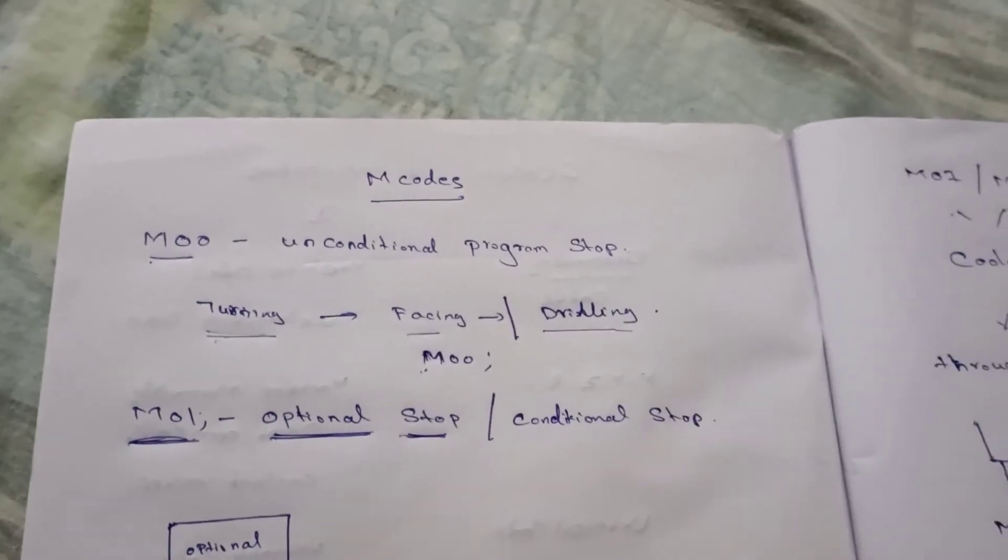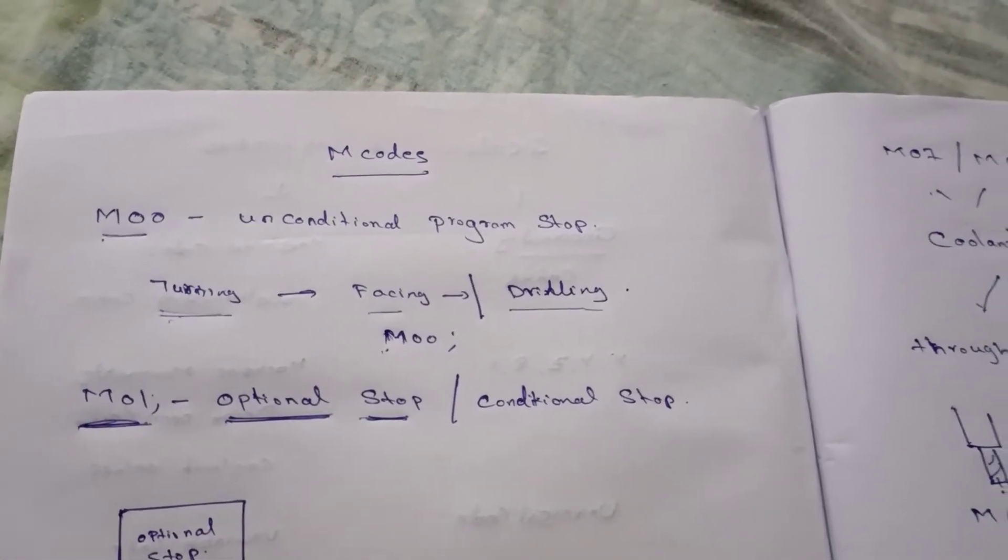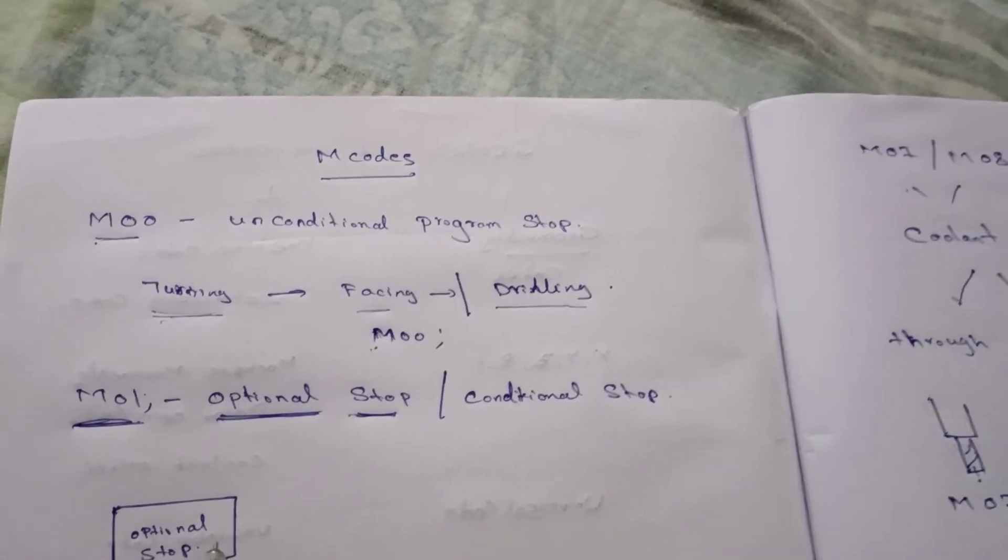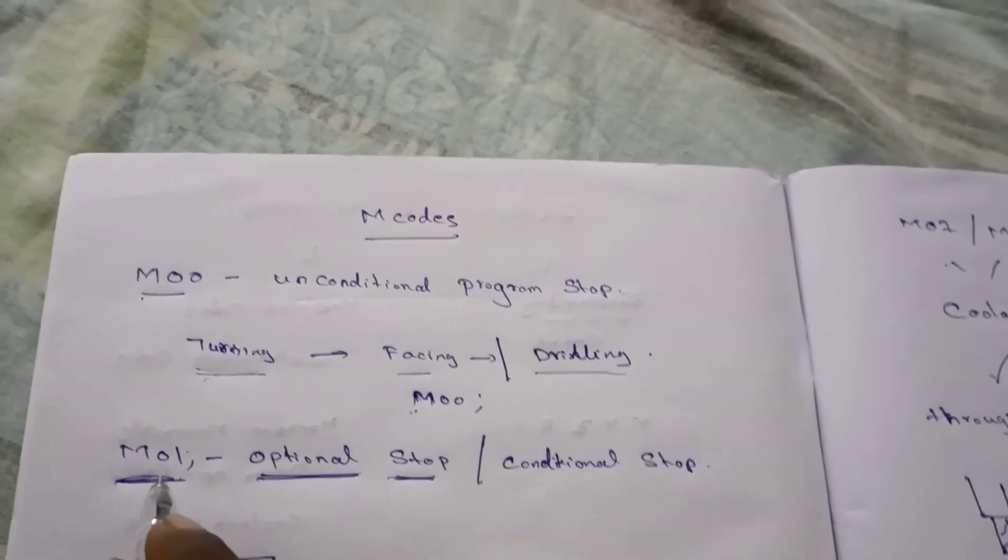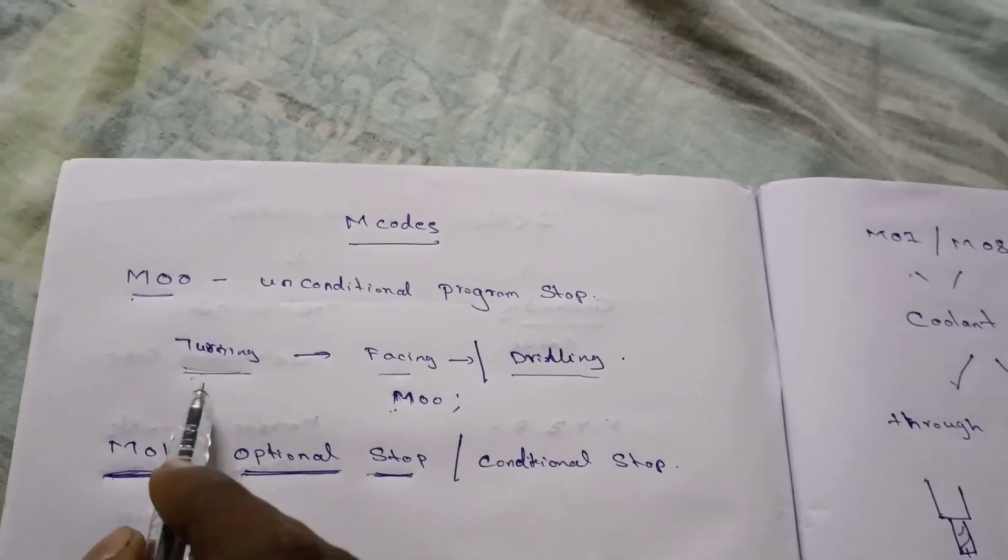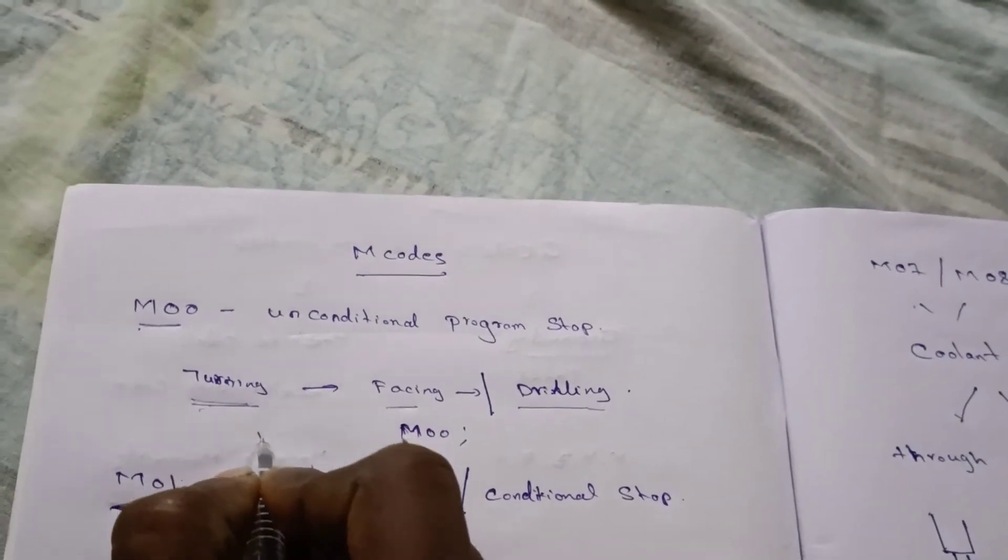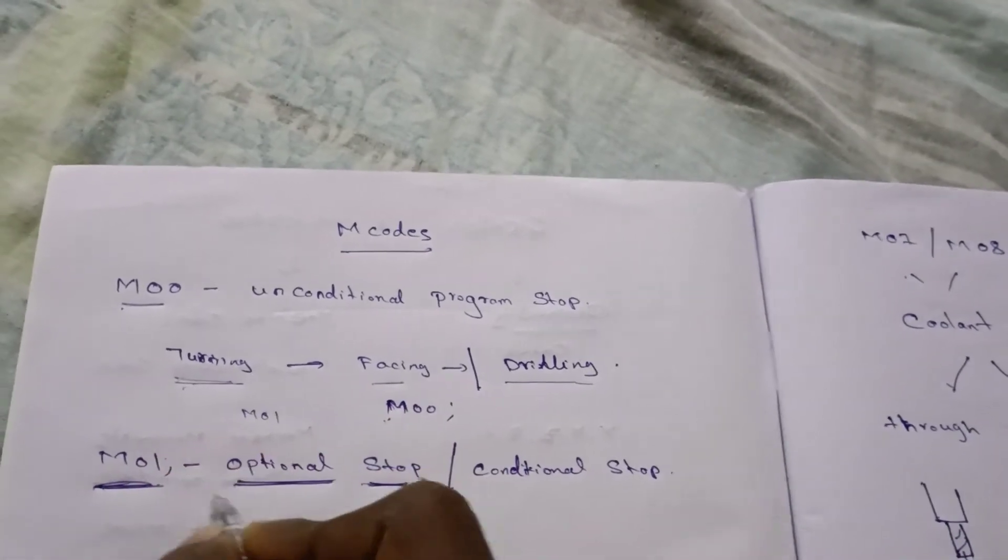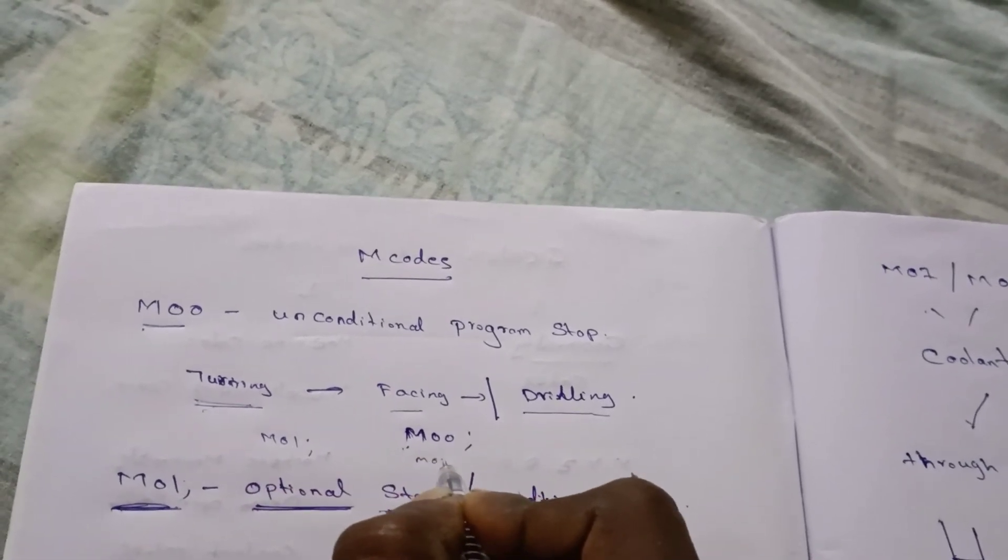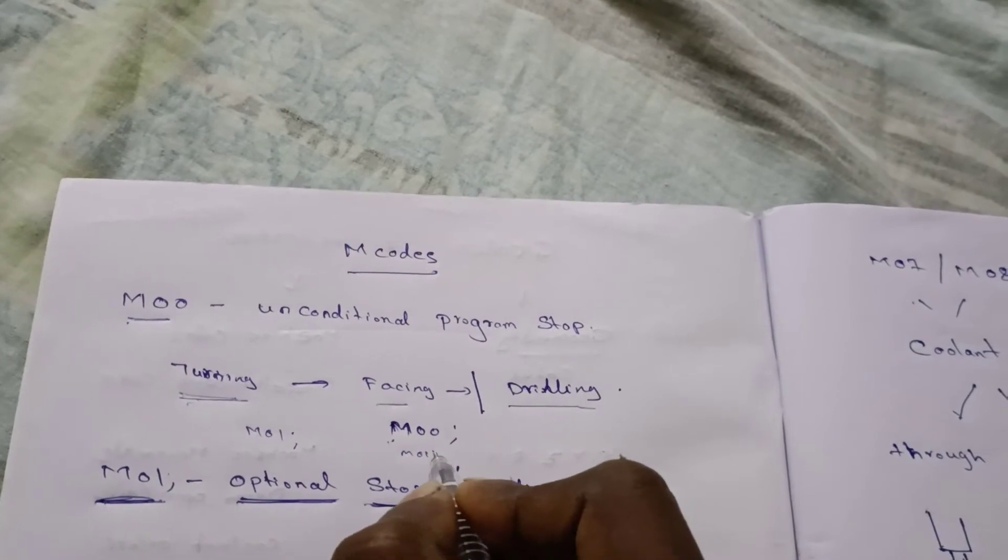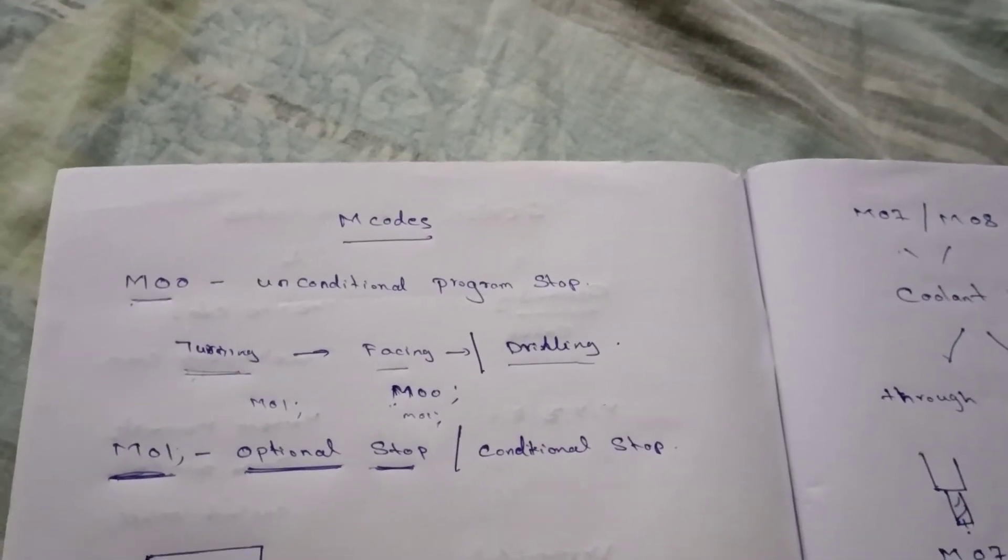There is an optional stop button on the control panel. When you activate this optional stop button on the control panel, when there is M01 after turning or after facing, when you activate the optional stop button, it will stop.